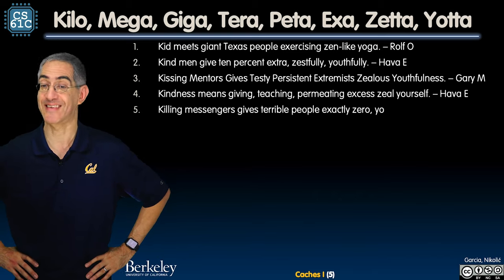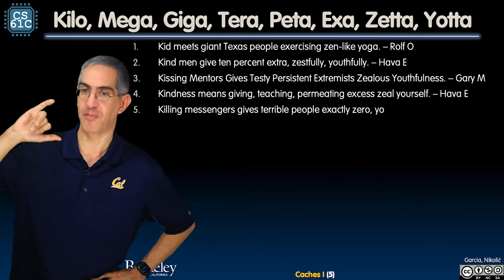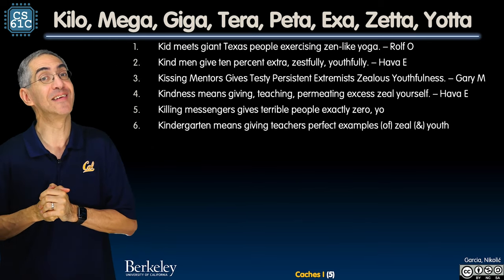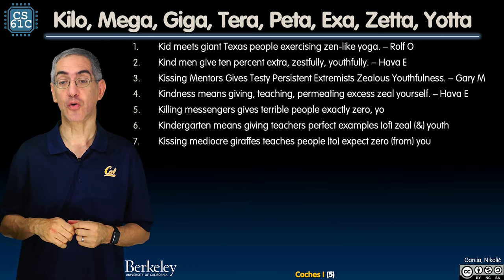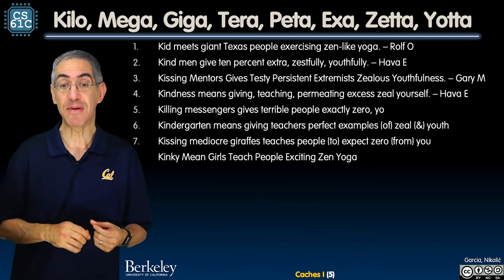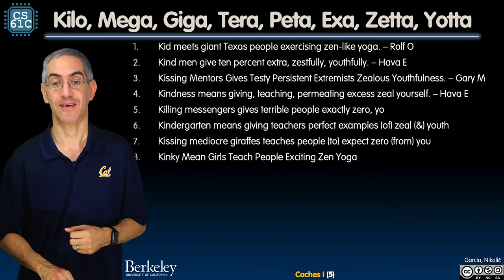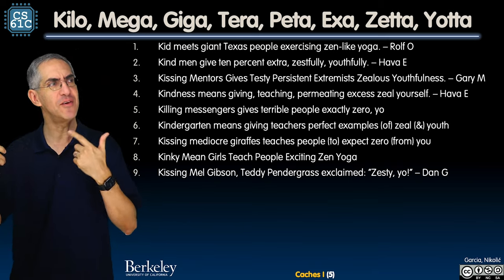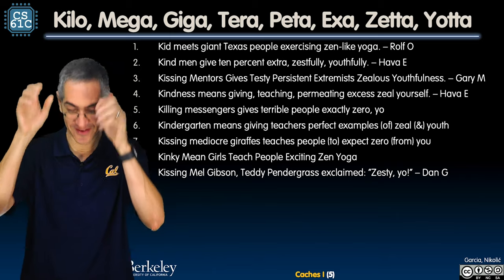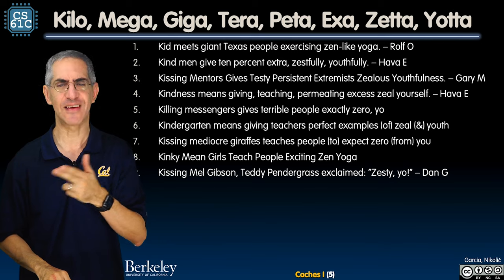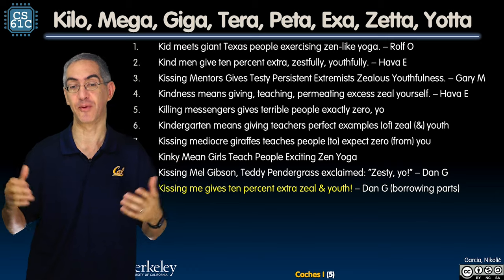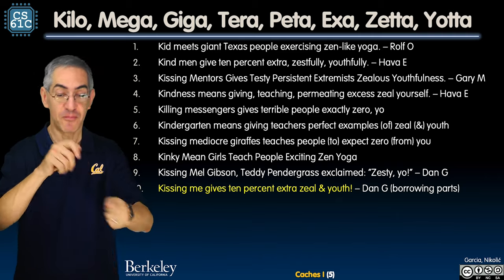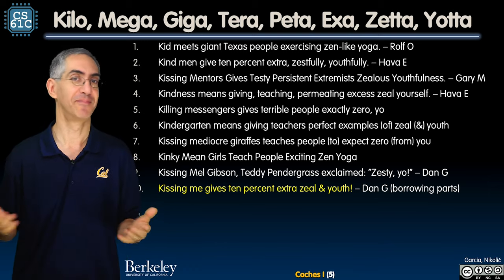'Killing Messengers Gives Terrible People Exactly Zero Yo' — don't kill the messenger! And: 'Kindergarten Means Giving Teachers Perfect Examples of Zeal in Youth.' The instructor's personal favorite to remember the order of Z and Y: 'Kissing Mel Gibson Teddy Pendergrass Exclaimed Zesty Yo!' — that's the one he actually uses when he gets stuck on whether it's Z then Y.